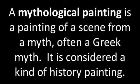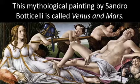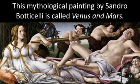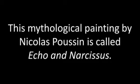A mythological painting is a painting of a scene from a myth, often a Greek myth. It is considered a kind of history painting. This mythological painting by Sandro Botticelli is called Venus and Mars. This mythological painting is called Echo and Narcissus.